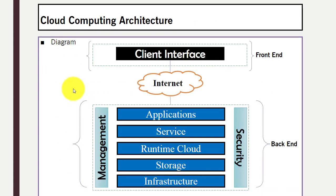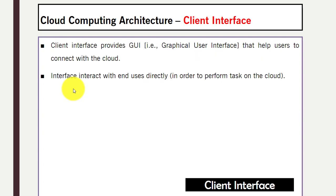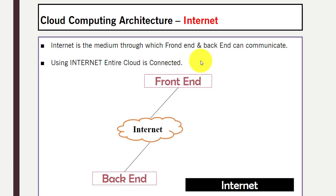Now we will discuss the components: client interface, application, services, runtime, storage, management, and security. The client interface provides a graphical user interface that helps users connect with the cloud so they can perform different tasks. Internet is the medium through which front end and back end can communicate, and using the internet the entire cloud is connected.